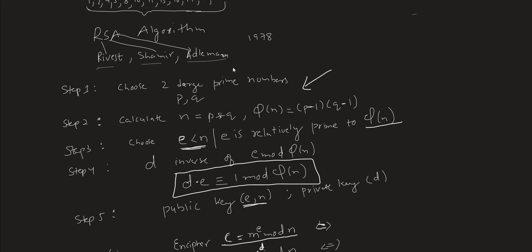The algorithm has a number of steps. It begins with choosing two large prime numbers, represented by P and Q. Then we calculate n, where n equals P times Q. Thereafter we calculate the totient function φ(n), which is given by P minus 1 times Q minus 1.